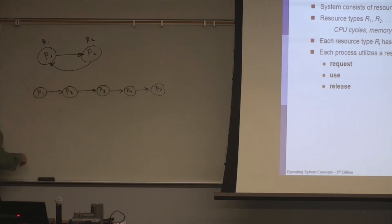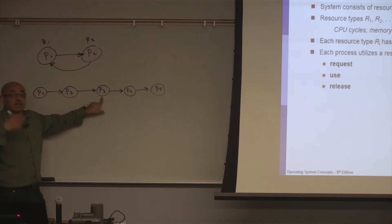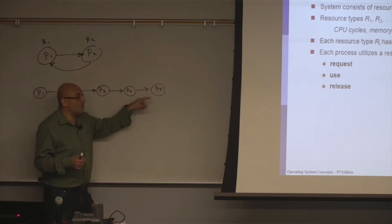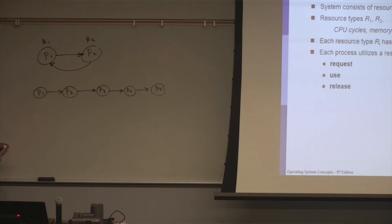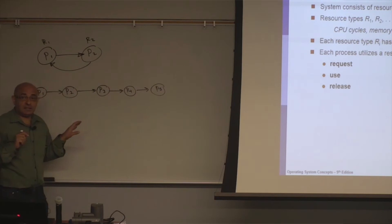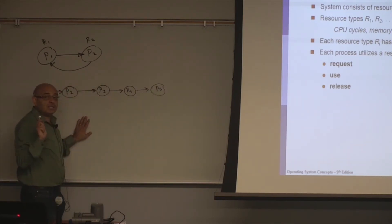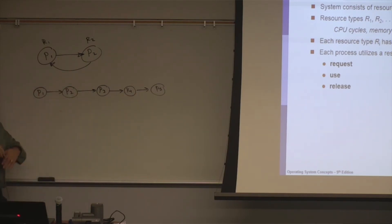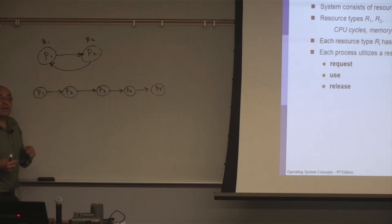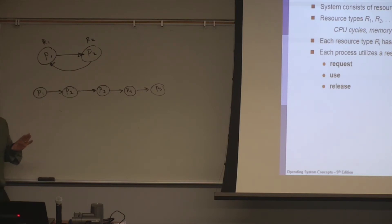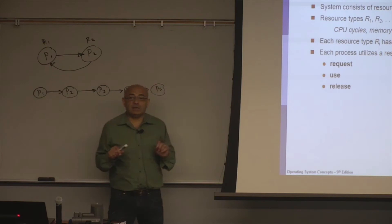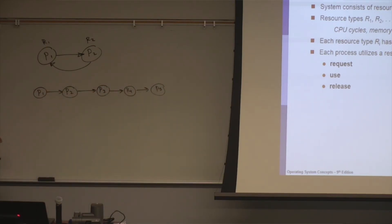Why isn't a linear chain a deadlock? P1 is waiting for P2 because P2 has a certain resource. P2 is waiting for P3, P3 for P4, P4 for P5. But eventually, because P5 is not waiting for any other process, P5 will be done with its resource, will make progress, and will release it. Then P4 can make progress and release its resource, and so on. All of them will eventually make progress. Waiting for a finite time is not a deadlock. A deadlock is waiting infinitely.